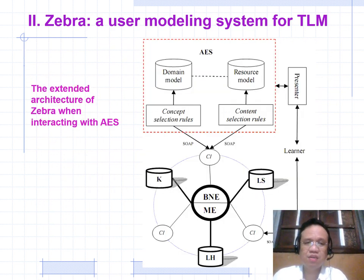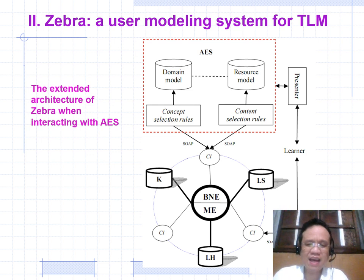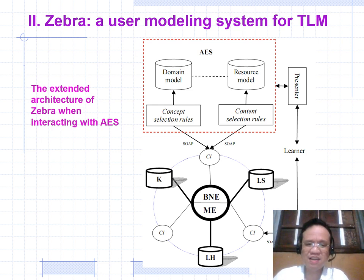The Bayesian Network Engine infers new personal traits from TLM using inference mechanisms available in the network. This engine combines the Bayesian network and hidden Markov model into the inference mechanism. The Knowledge and Learning Style submodels are managed by this engine. This is the standard architecture of the user modeling system for TLM when interacting with an AES (Adaptive Education System).